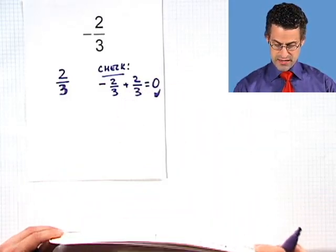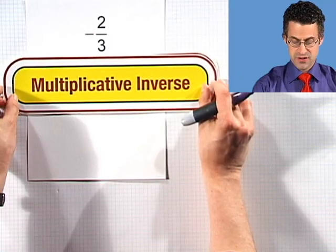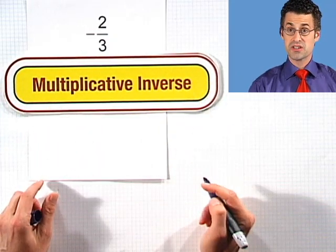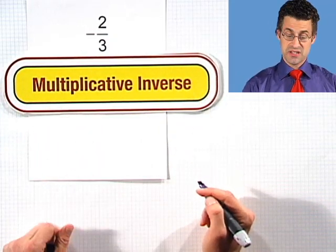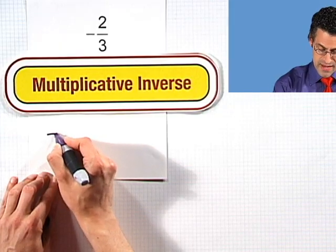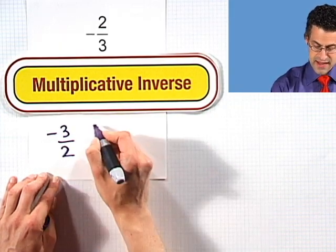Let's see if we can find the multiplicative inverse of negative 2 thirds. What is it going to be? Well, it's the reciprocal, so that would be negative 3 over 2.